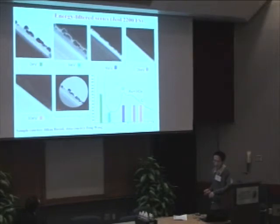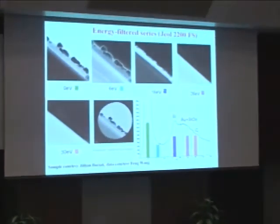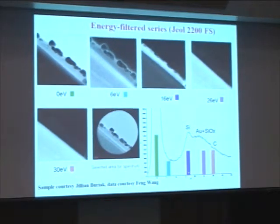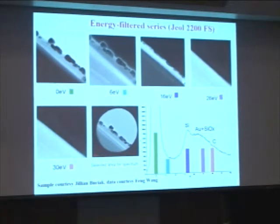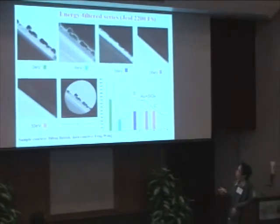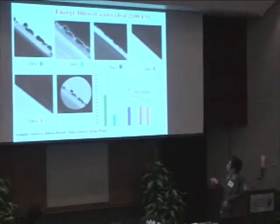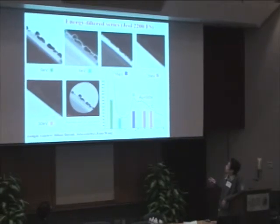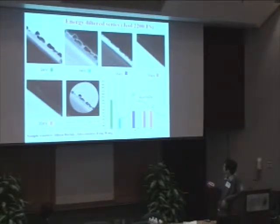Both machines are equipped with energy filtering lenses, which can provide chemical contrast by filtering at different energy losses of electrons passing through the sample. Here is an example of gold nanoparticles on silicon nanowires. By filtering at different energies — around 6 eV you see carbon contrast, around 60 eV you see silicon, and around 26–30 eV you see carbon again — you can observe the chemical contrast.